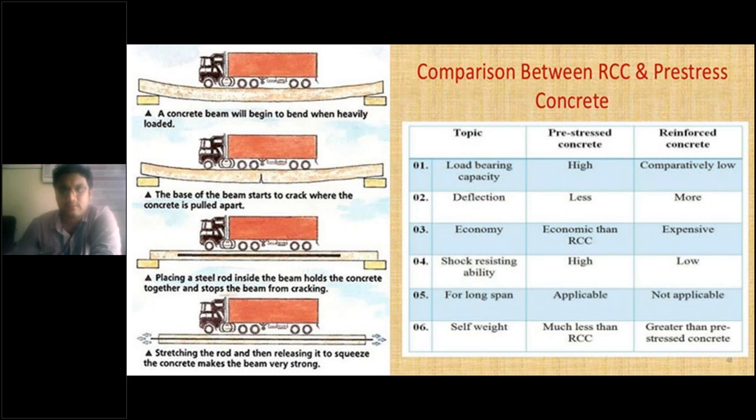The first parameter is load-bearing capacity. In prestressed concrete, load-bearing capacity is high compared to reinforced concrete structures — because in PSC the concrete is squeezed by applying tensile force to the rod, making it very strong. The second parameter is deflection: prestressed concrete has very less deflection whereas reinforced concrete has more deflection.